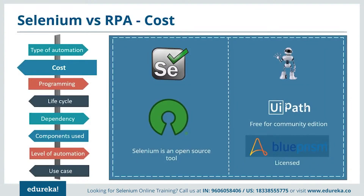Now let's talk about the cost. Selenium is an open source tool — free of cost. RPA has a set of tools like UiPath, Automation Anywhere, and Blue Prism. UiPath is free for community edition with licensed advanced versions. Automation Anywhere gives a free trial for one month with licensed advanced versions. Blue Prism is completely licensed.